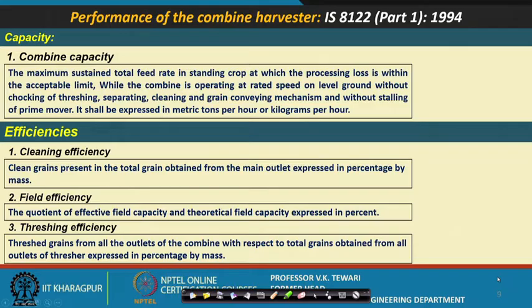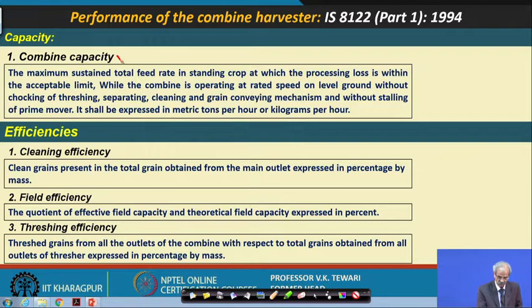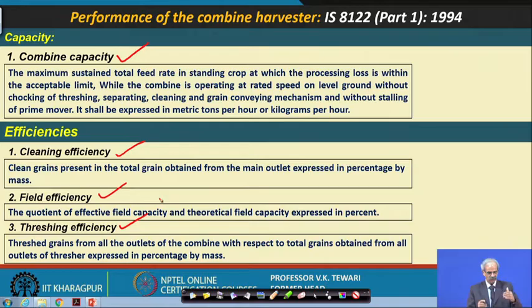Regarding performance testing of the combine harvester: as an engineer, you must be able to test and certify these machines. Key parameters include: combined capacity, feed rate, different types of losses, cleaning efficiency, field efficiency in hectares per hour, and threshing efficiency. These are essential performance parameters that must be measured and reported.